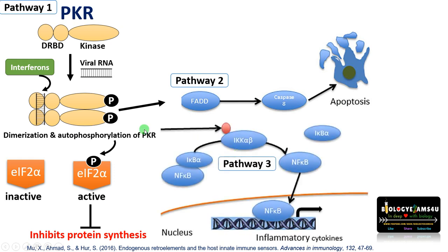The third pathway: phosphorylated PKR can phosphorylate IκB subunits — the alpha and beta subunits — which further activates NF-κB. NF-κB is a transcription factor. Phosphorylation causes its translocation from the cytoplasm to the nucleus, where NF-κB drives expression of genes involved in inflammation. This pathway leads to inflammation, initiated by IκB and activation of NF-κB as a result of phosphorylation by PKR.